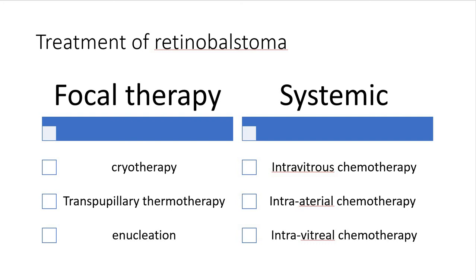Transpupillary thermotherapy (TTT) is also effective and can be used alone or in conjunction with chemotherapy. We cook the tumor with very large spots of laser, usually done in four to five sessions along with chemotherapy if needed. Enucleation is usually done for solitary tumors with sporadic cases — very large tumors requiring the eye to be removed where chemotherapy or transpupillary thermotherapy are not applicable.